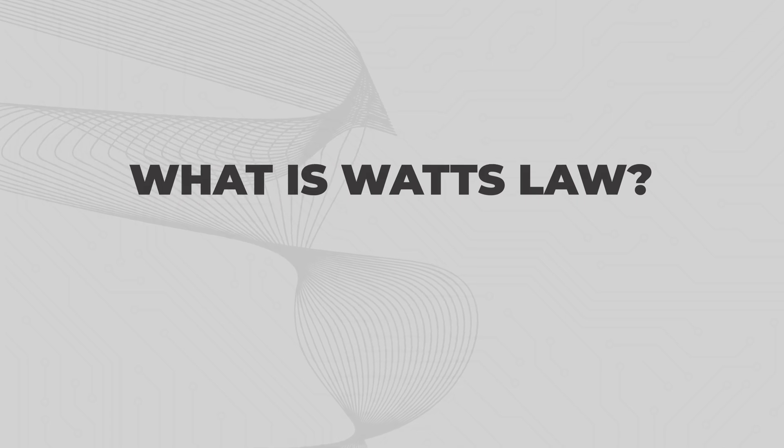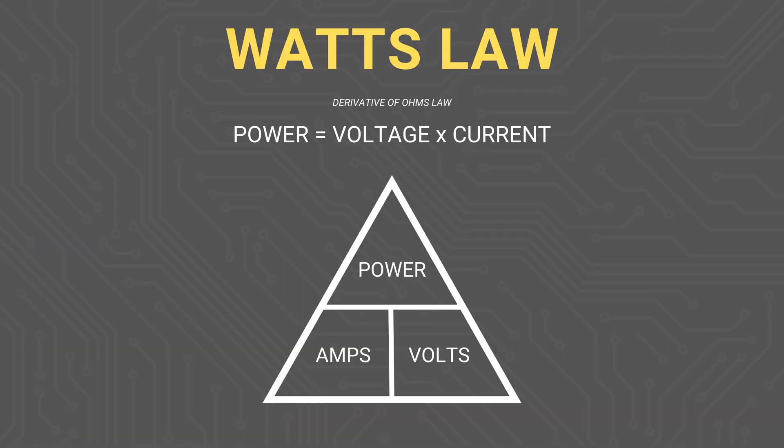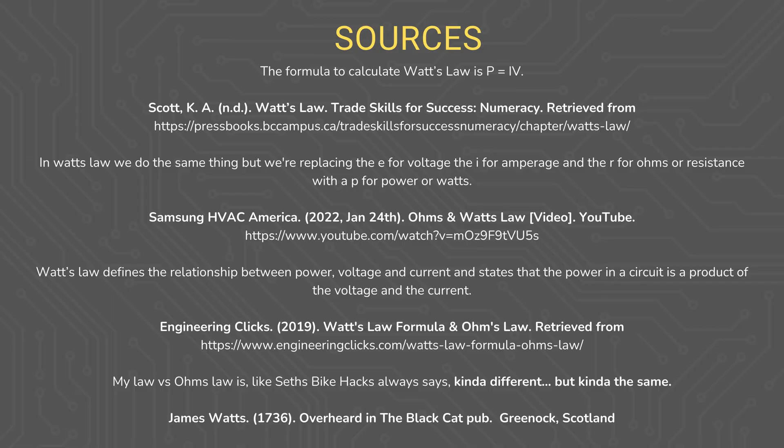What is Watt's Law? Watt's Law defines the relationship between watts, volts, and amps and says that the power in a circuit is a product of the voltage and the current. The formula of Watt's Law is what helps us determine these relationships when a variable is unknown. Watt's Law is a derivative of Ohm's Law. And for those of you who say that Watt's Law doesn't exist, here are my sources cited. For the rest of you, welcome back to Algebra.